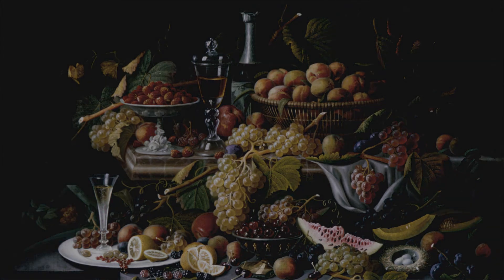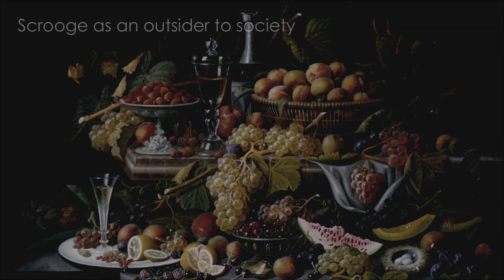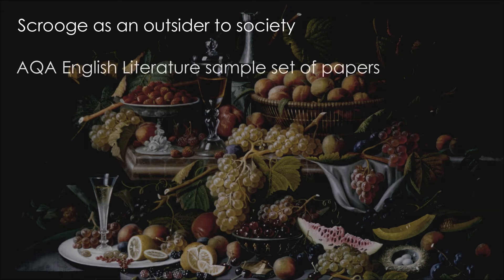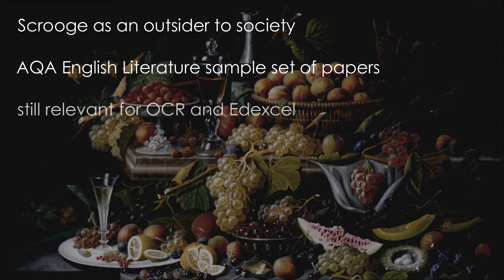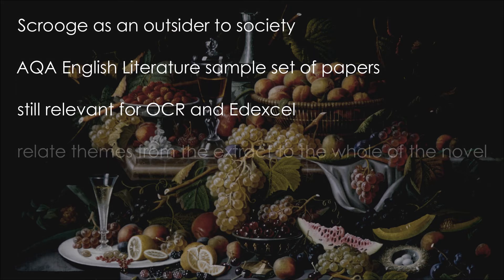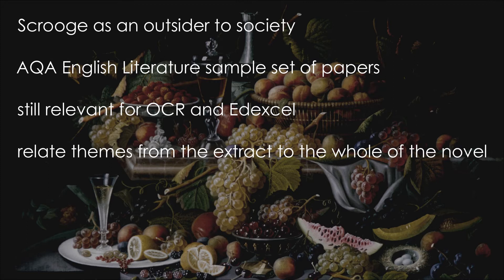In this video, I'm going to explore a range of responses to the question about how Dickens presents Scrooge as an outsider to society, which appeared in the AQA English Literature sample set of papers. If you're studying A Christmas Carol with either OCR or Edexcel, this video will still be helpful, as the questions have pretty much the same structure, where you are invited to first consider how something is presented in an extract, and then how it is presented in the novel as a whole.